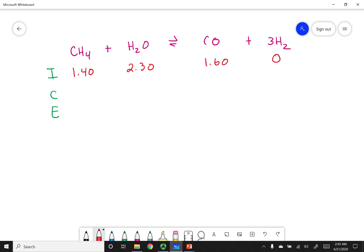Let's do our change. We see that one of my products is zero, so that means I'm going to have to make products. Both of my products get a plus, and to make my products, I'm going to have to consume reactants, so that's going to be negatives on that side. Then we use our stoichiometric coefficient to relate the changes to each other: minus x, minus x, plus x, and plus 3x. Then we do I plus C, which gives us E: 1.40 minus x, 2.30 minus x, 1.60 plus x, and 3x.